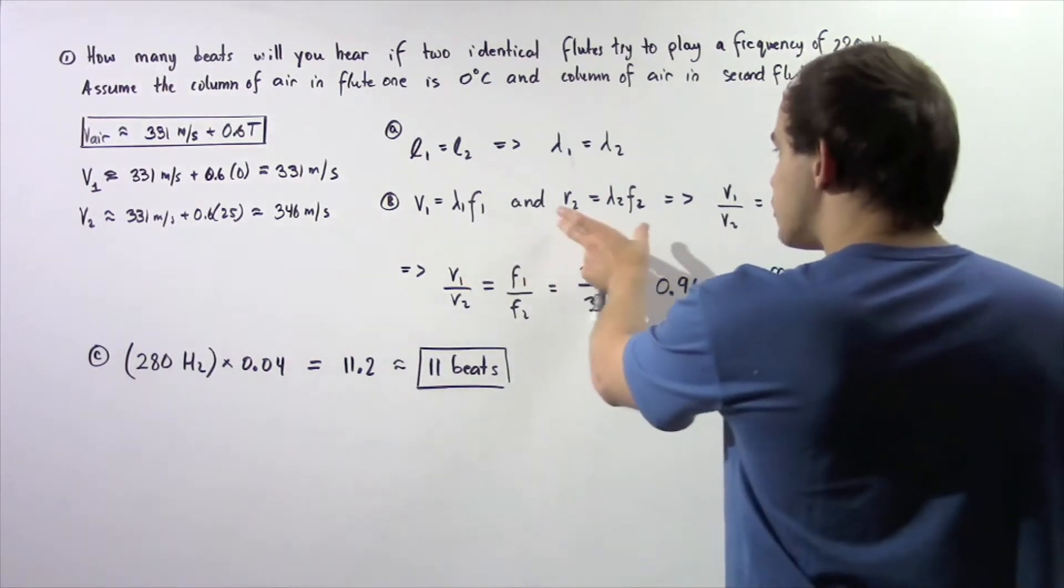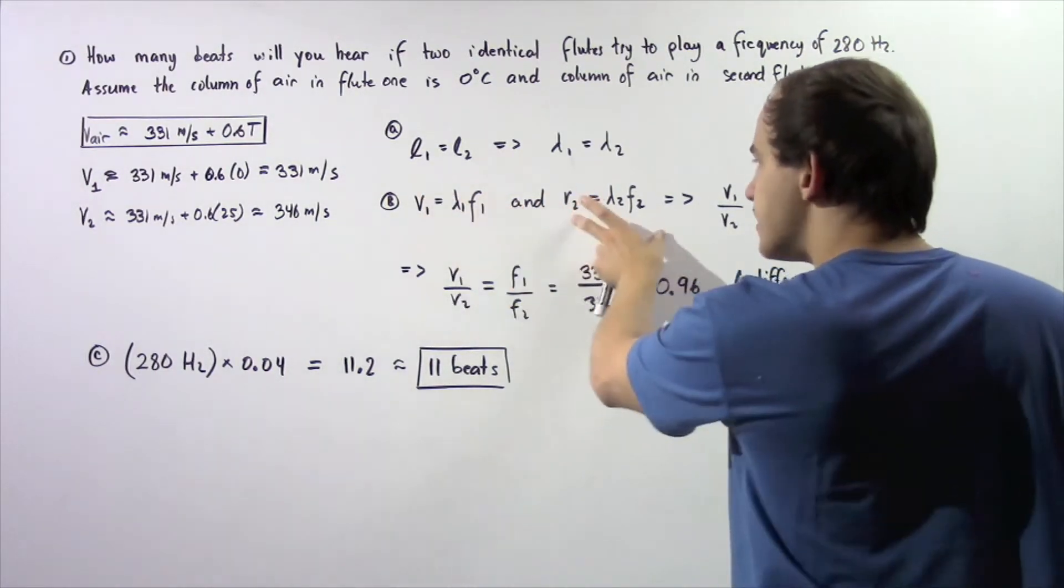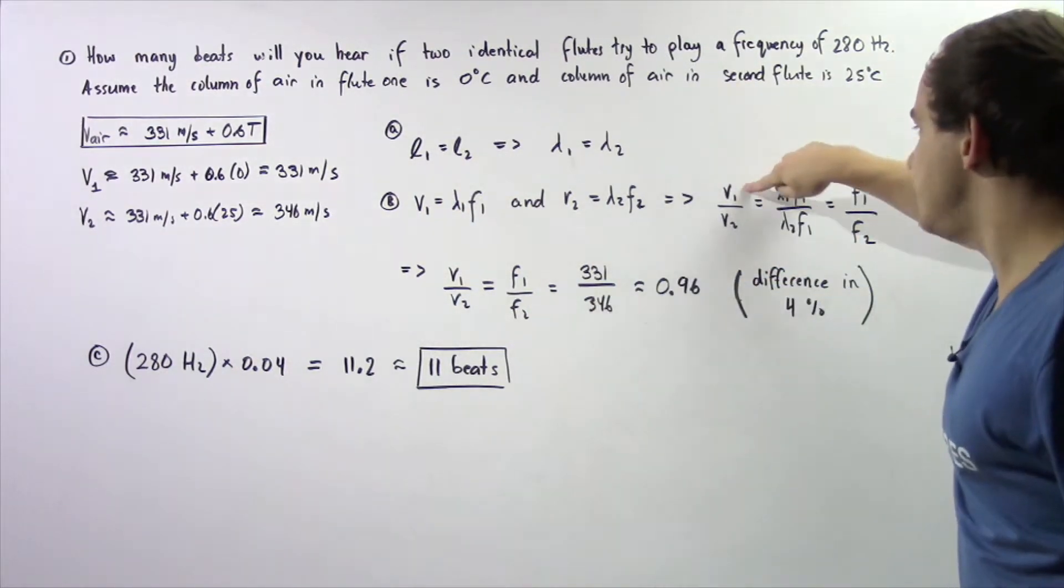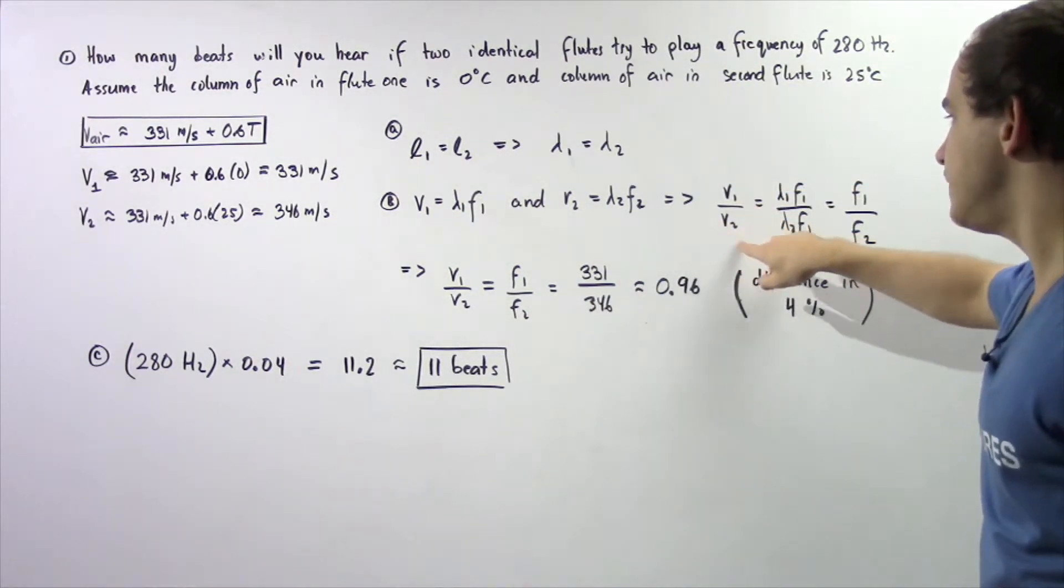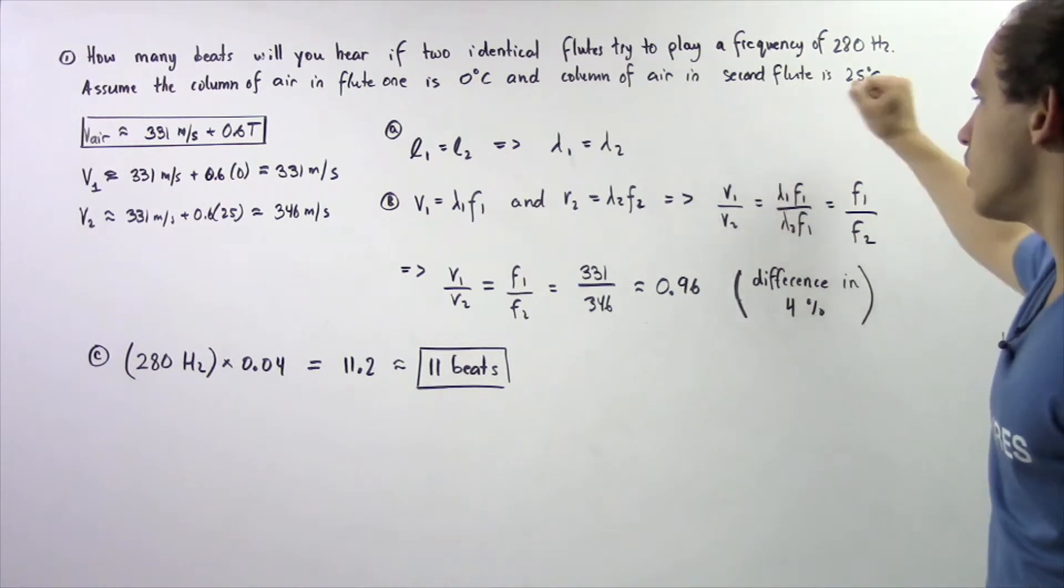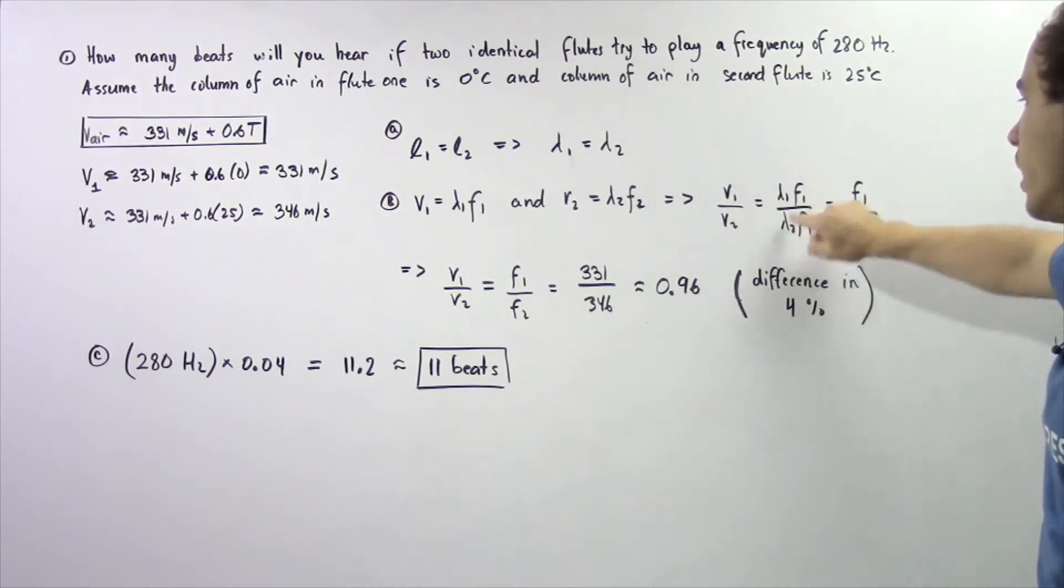So we essentially take this and divide this by this. So we get velocity V1 divided by velocity V2 is equal to the product of lambda one F1 divided by lambda two F2.